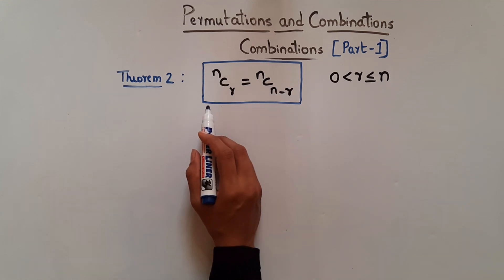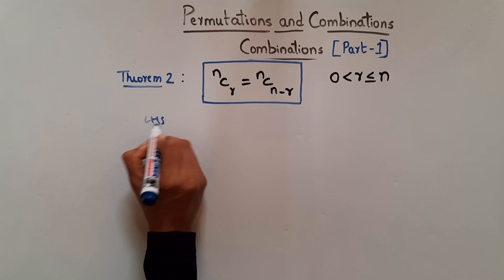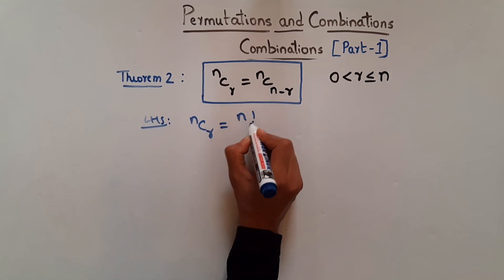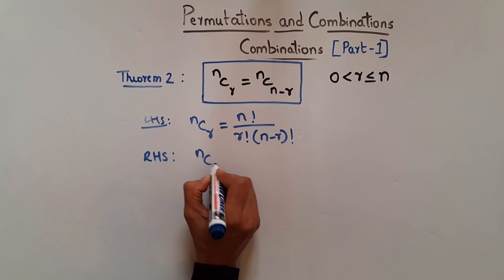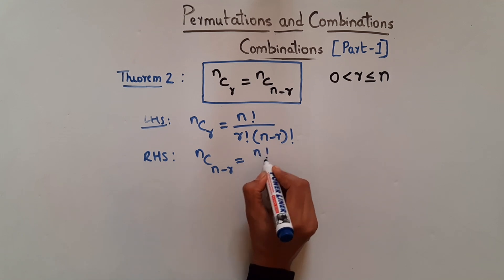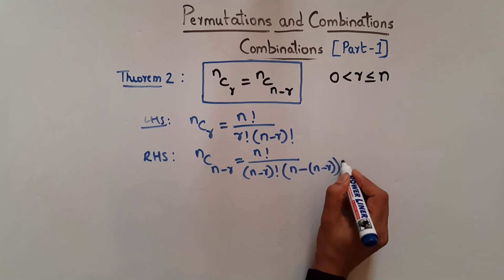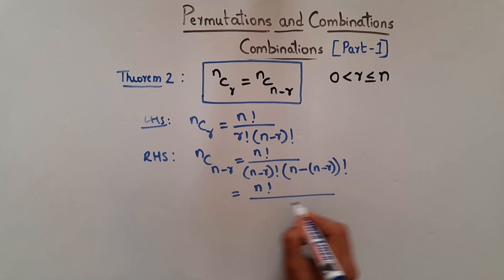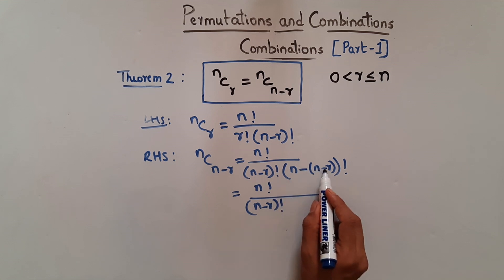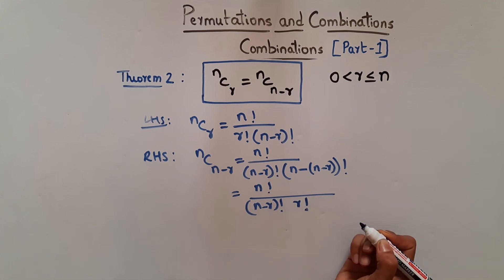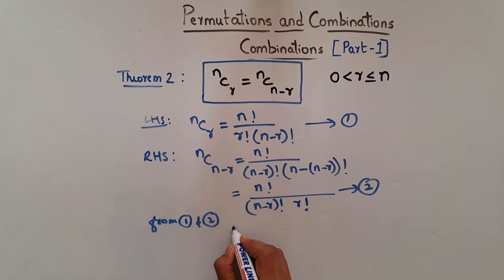Theorem 2 states: nCr = nC(n−r), where 0 < r ≤ n. LHS: nCr = n! / (r! × (n−r)!). RHS: nC(n−r), substituting r with (n−r): n! / ((n−r)! × (n−(n−r))!) = n! / ((n−r)! × r!). Since LHS equals RHS, the theorem is proved.